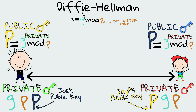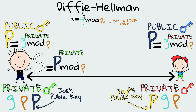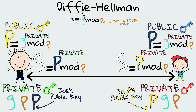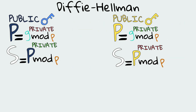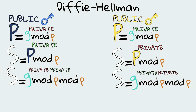Now let's see how the shared secret will be derived. JP computes the shared secret on his side using: S equals the public key of Joe raised to JP's private key mod p. Joe also computes the shared secret on his side using JP's public key and his own private key. The secret key they have each calculated independently will be the same. We can substitute in each side the public key by its equation to find that the values will indeed be identical.